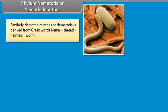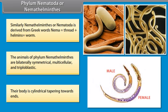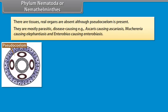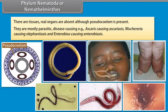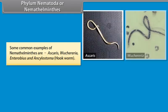Phylum Nematoda or Nemathelminthes. Nemathelminthes or Nematoda is derived from Greek words 'nema' meaning thread, plus 'helminthes' meaning worm. The animals of Phylum Nematoda are bilaterally symmetrical, multicellular, and triploblastic. Their body is cylindrical tapering towards the ends. There are tissues but real organs are absent, although pseudocoelom is present. They are mostly parasitic disease-causing organisms, e.g. Ascaris causing Ascariasis, Wuchereria causing Elephantiasis, and Enterobius causing Enterobiasis. Common examples include Ascaris, Wuchereria, Enterobius, and Ancylostoma (hookworm).